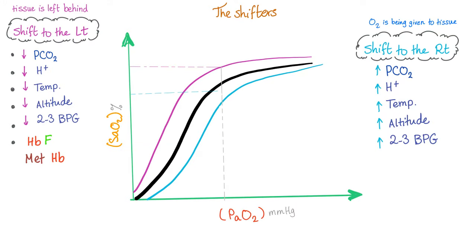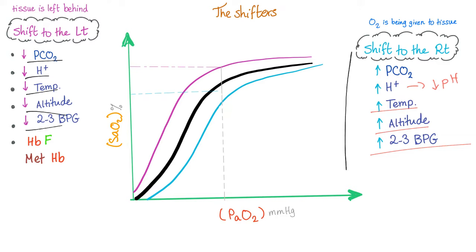Shifters of the oxygen dissociation curve — right shift and left shift. What shifts the curve to the right? Increased PCO2, increased hydrogen ion concentration leading to decreased pH, increased temperature, increased altitude, and increased 2,3-DPG. Shifters to the left are the exact opposite: decreased PCO2, decreased hydrogen ion concentration, decreased temperature, decreased altitude, and decreased 2,3-DPG.